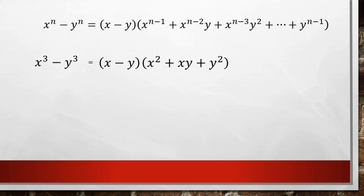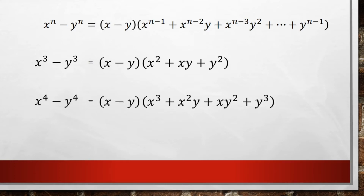If we look at x to the 4th minus y to the 4th, we're still going to have a factor of x minus y. But now we always start with n minus 1 in the second parentheses, so that would be x cubed. Notice how the exponents of x are going down from 3, 2, 1, and then 0, while the exponents of y start at 0 and go up to 1, 2, and 3.